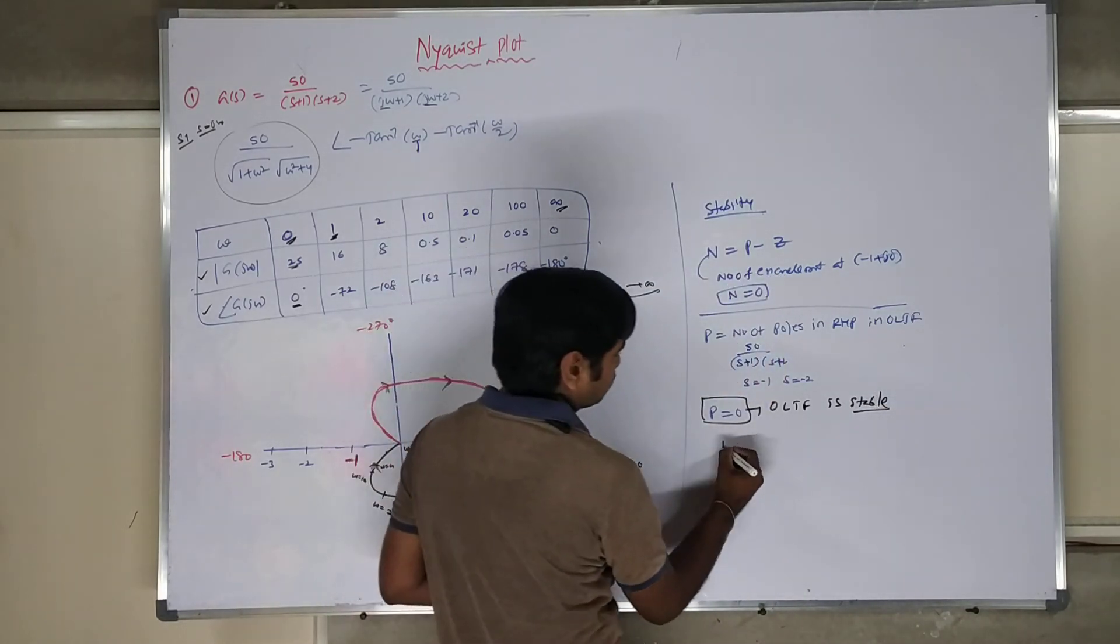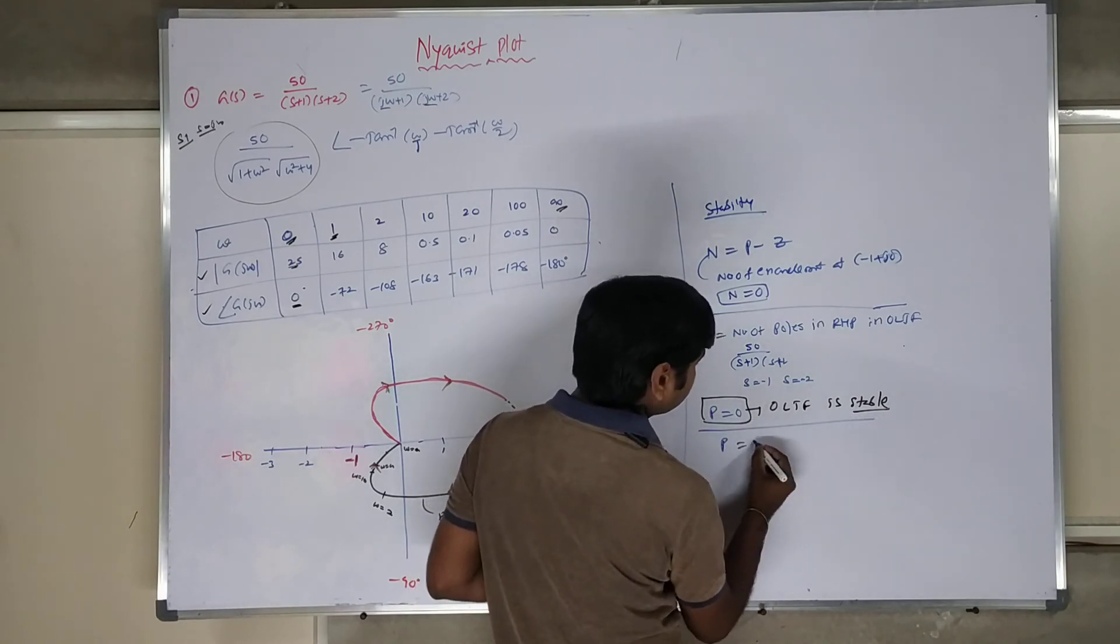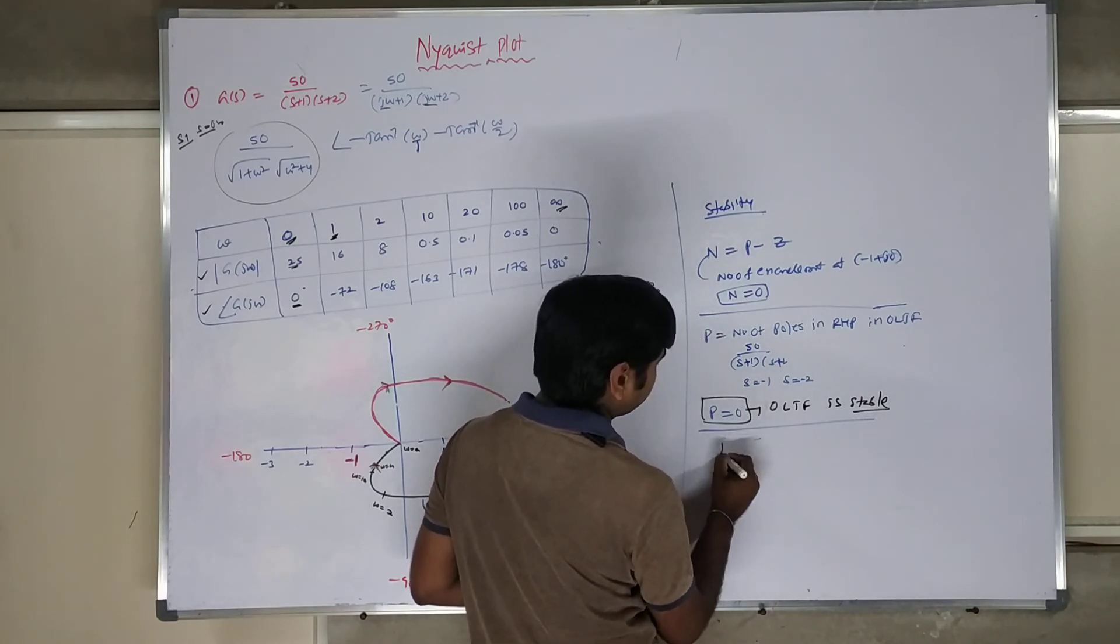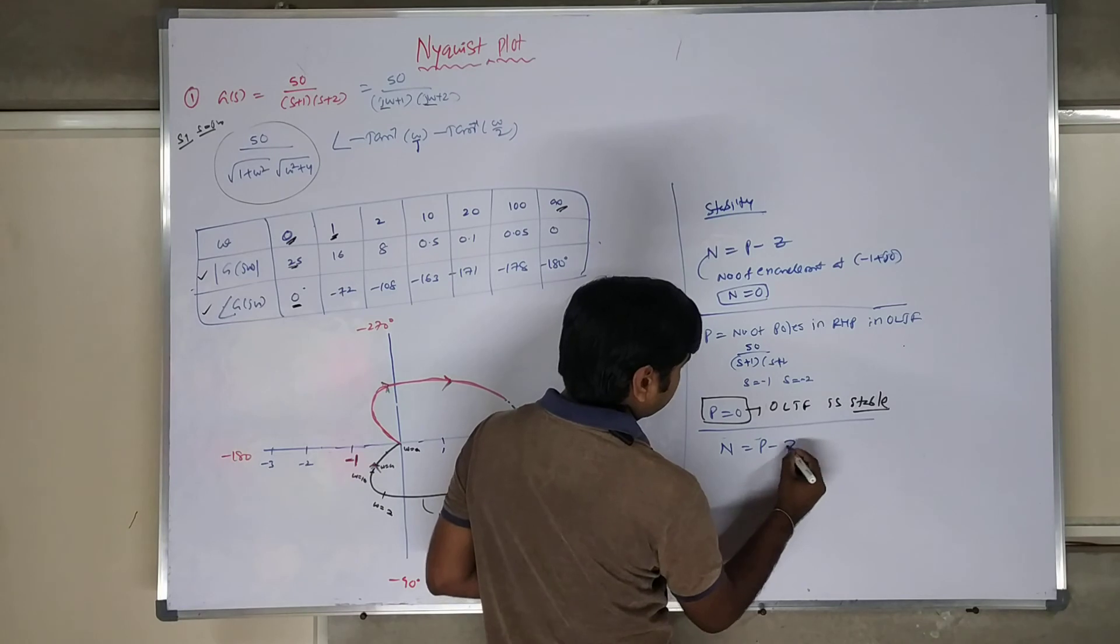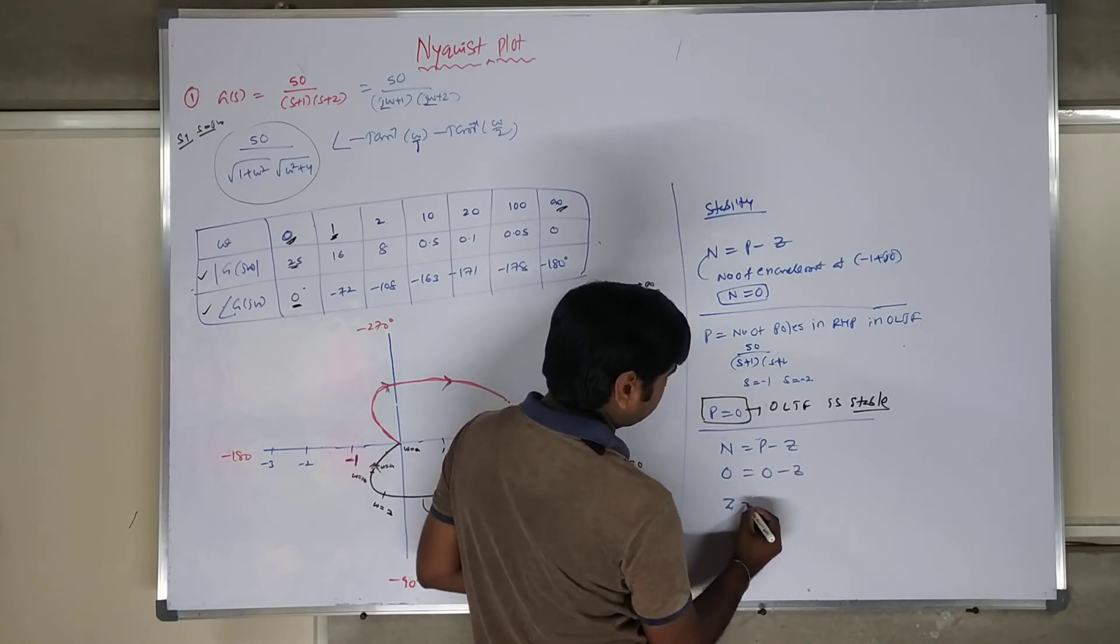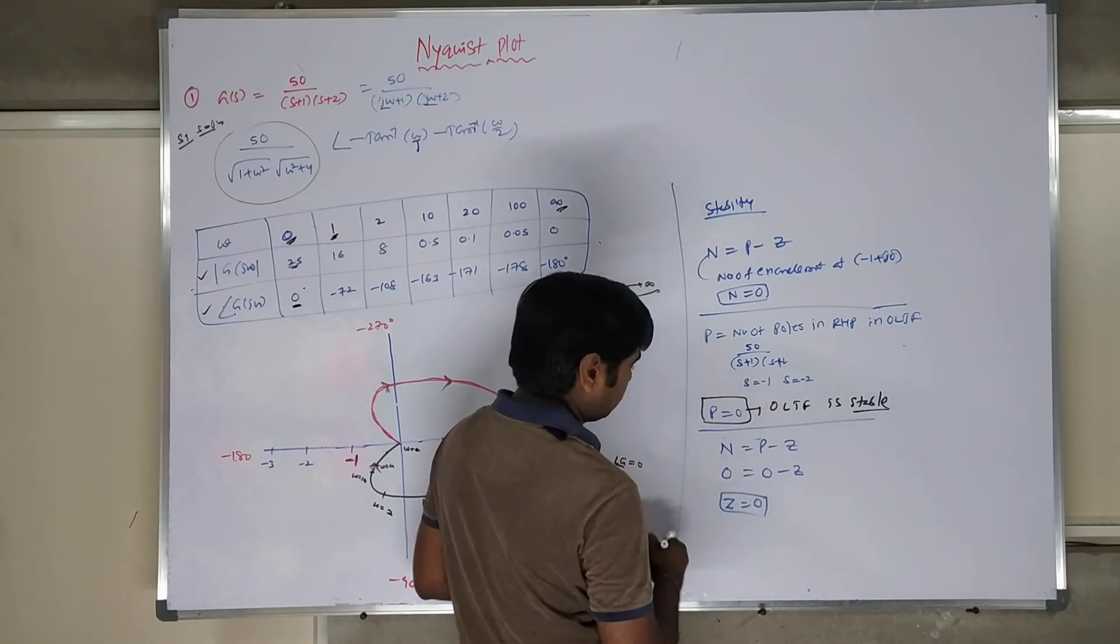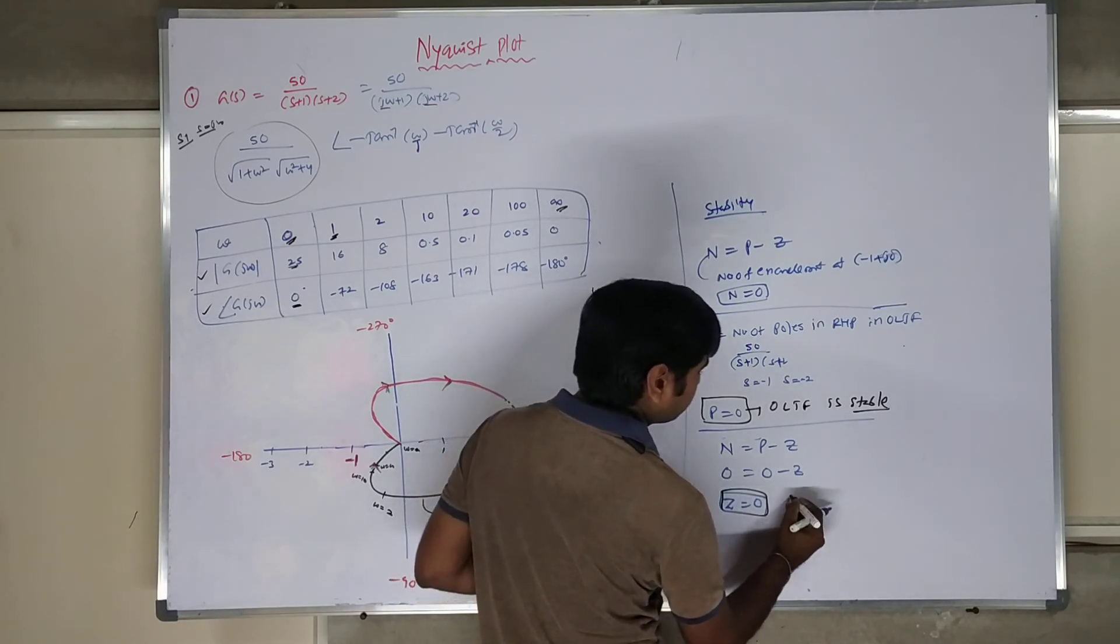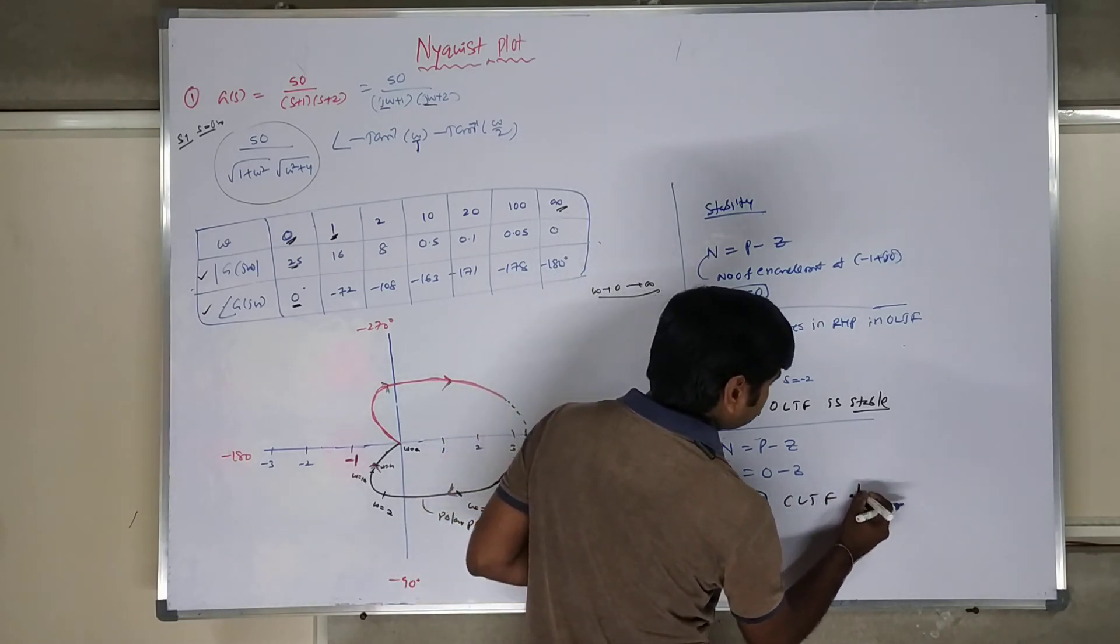Then find out Z also. So P is equal to this. N is equal to P minus Z. So N is equal to 0. P is equal to 0. Corresponding Z is equal to 0. When Z is equal to 0, what is it going to say? Closed loop transfer function is also stable.